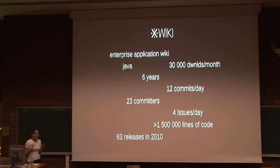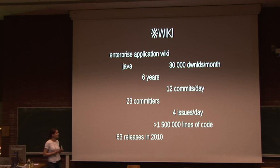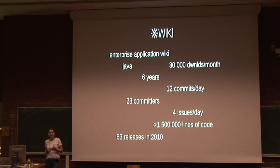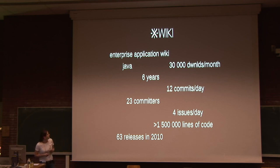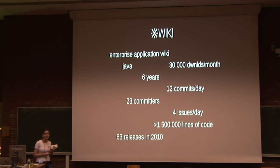A bit about XWiki: XWiki is an enterprise application wiki written in Java, it's been there for six years. From 2010, 23 committers, 12 commits per day, four issues fixed per day, which is quite good.